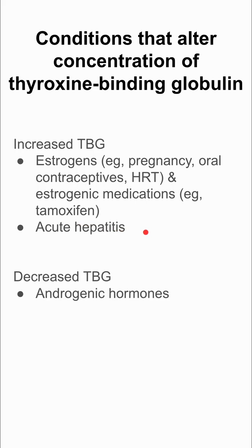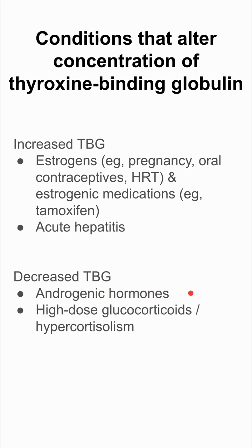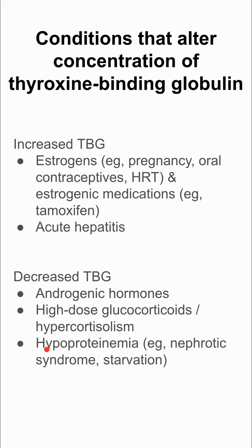Decreased TBG, on the other hand, comes from androgenic conditions — so androgenic hormones, high-dose glucocorticoids, and hypercortisolism, so anything that might cause Cushing's syndrome — which can predispose you to having decreased TBG. Also hypoproteinemia, like in nephrotic syndrome and starvation. Chronic liver disease is the last condition that decreases your TBG.